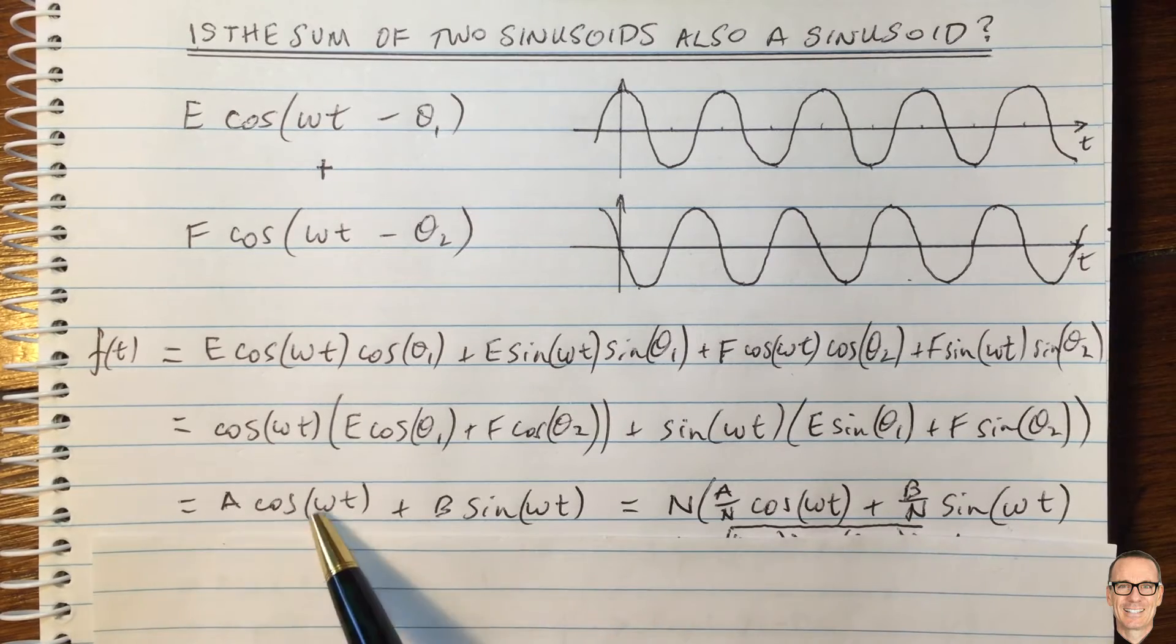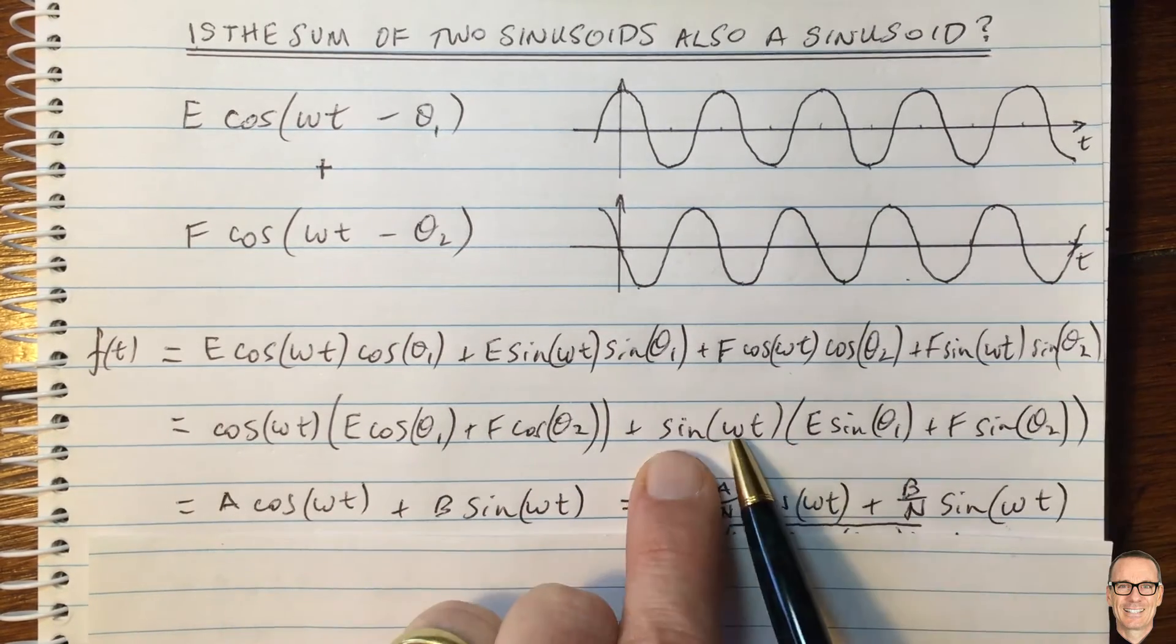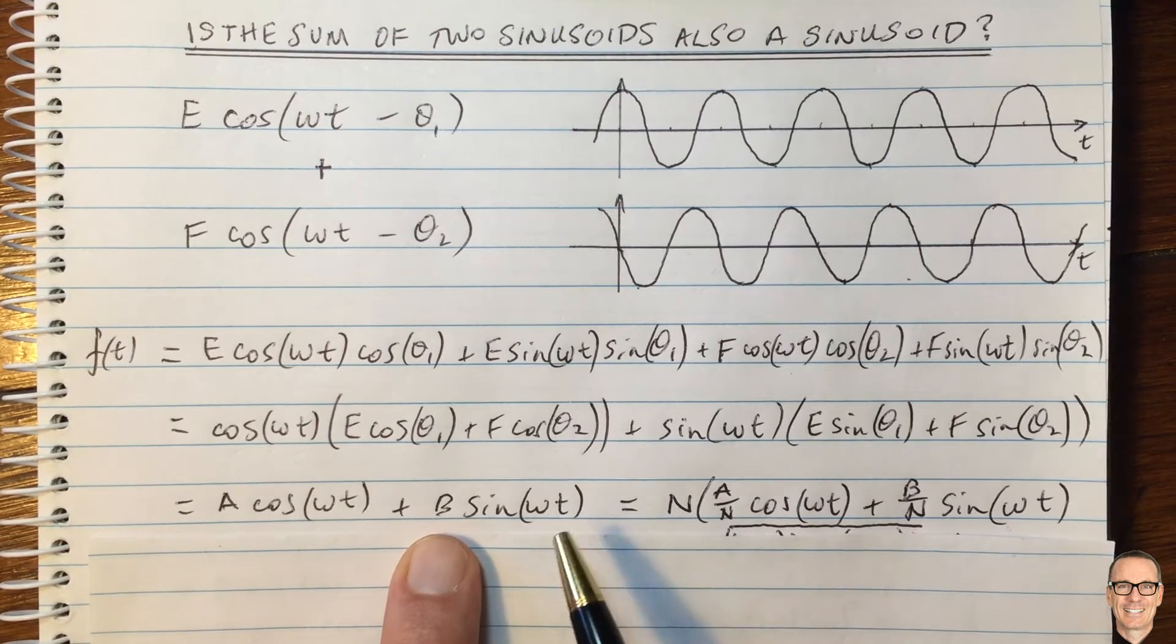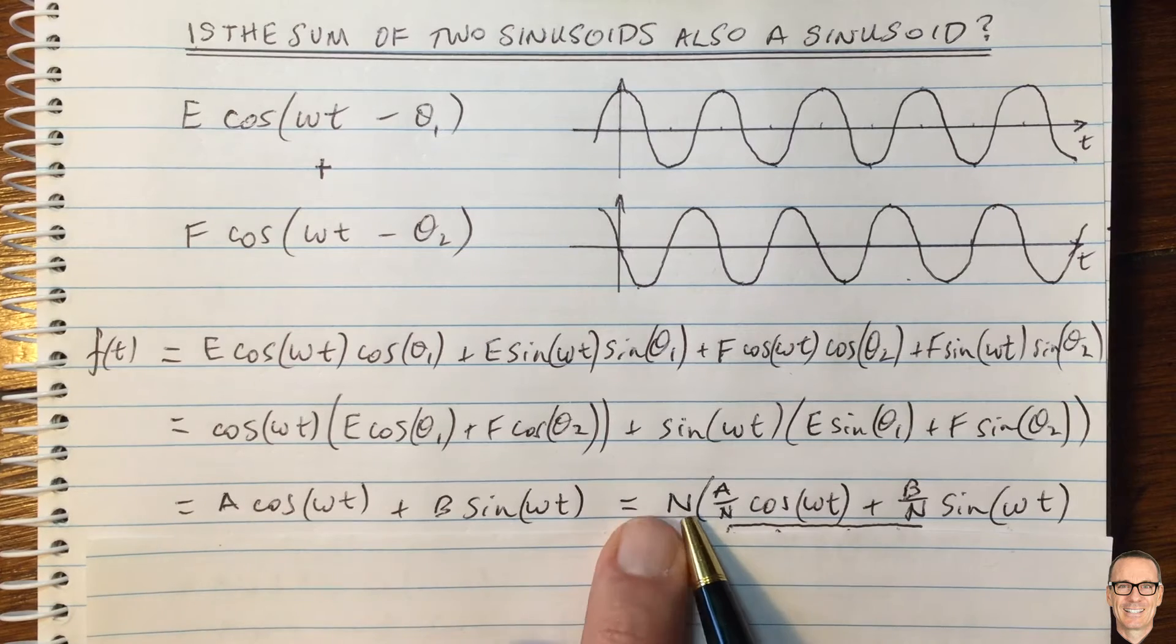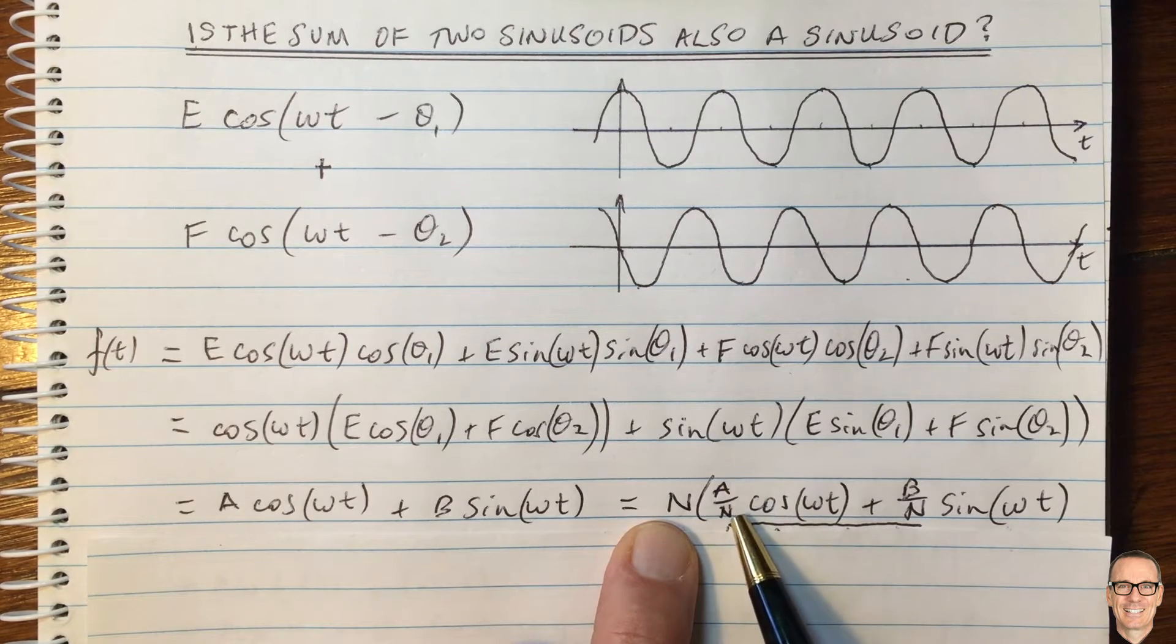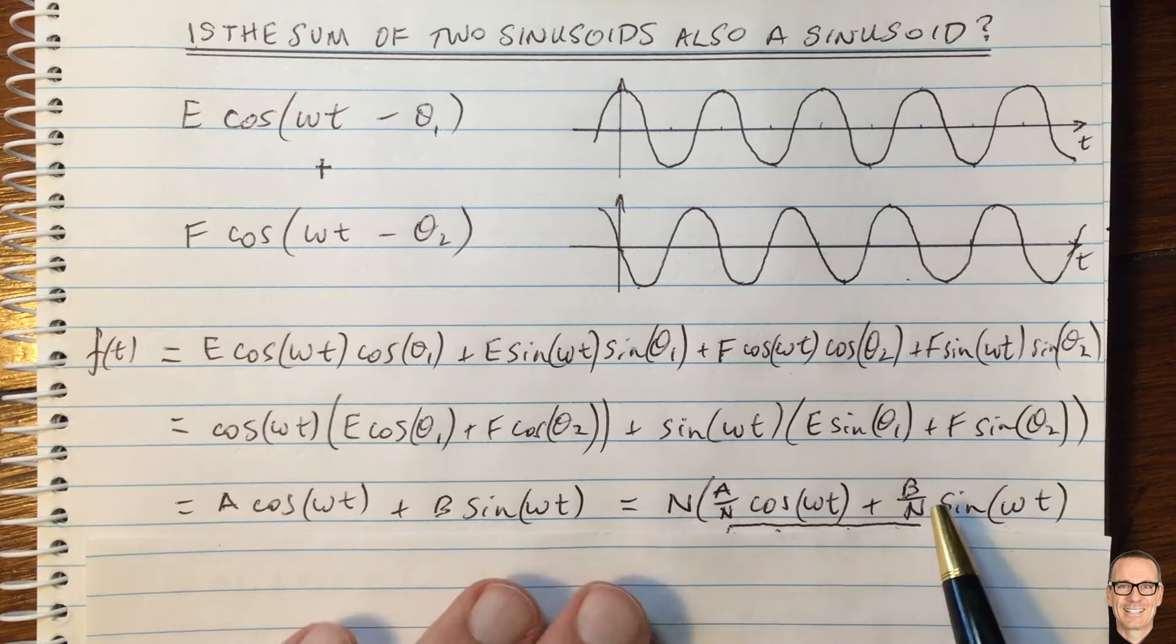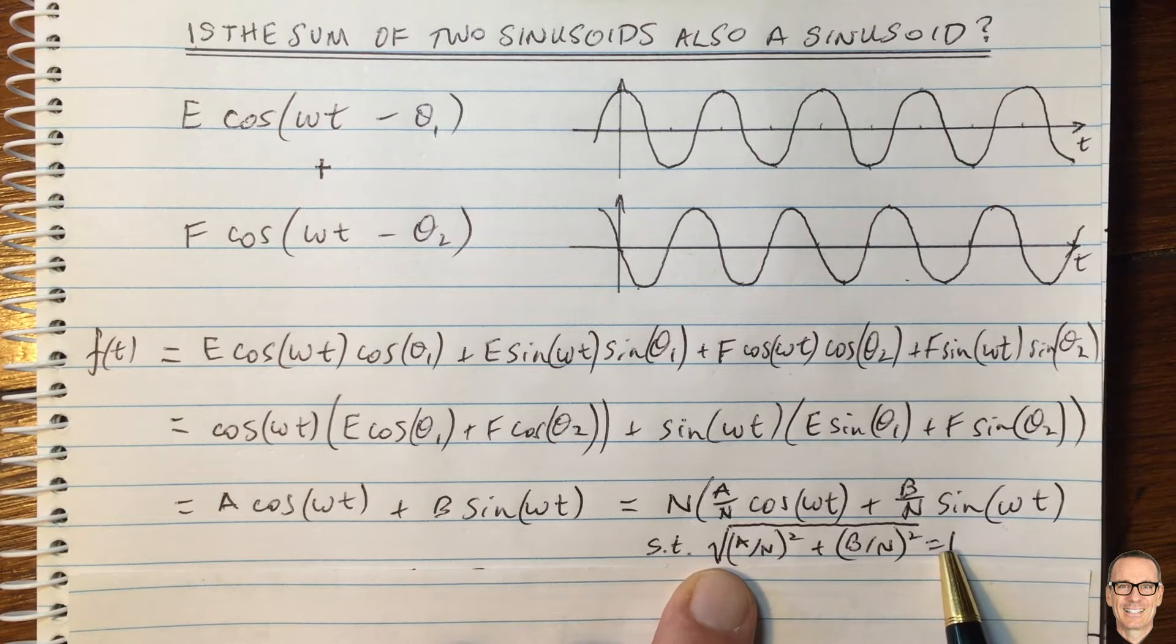So here we have A cos omega t. That's this one, omega t. And then B sine omega t. And then I'm just going to do some scaling of this. So I'm going to pull out a normalization term N. I'm just taking it out the front. So now I've got A divided by N and B divided by N. And we're going to choose N to be such that this expression holds.